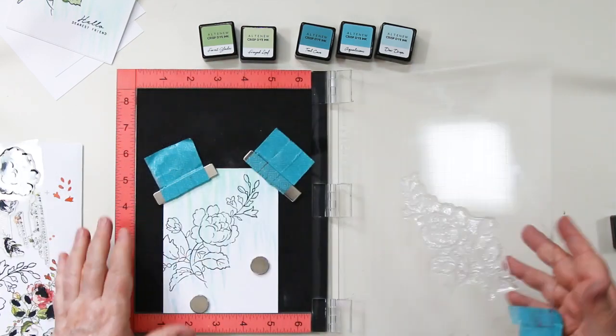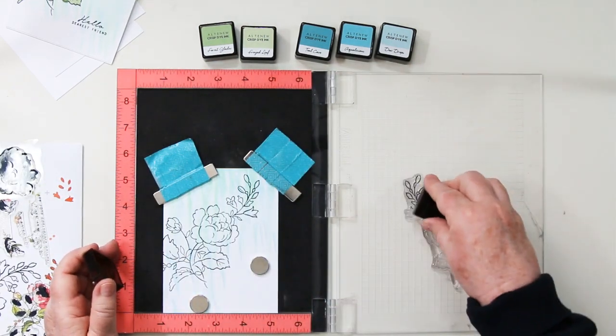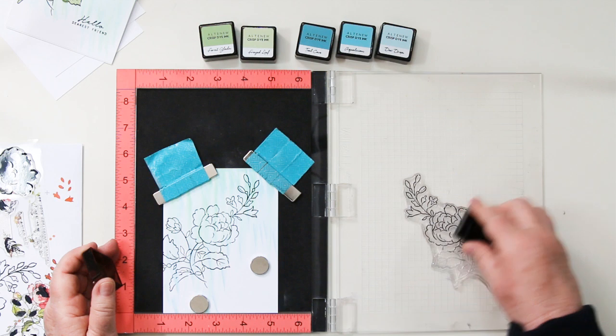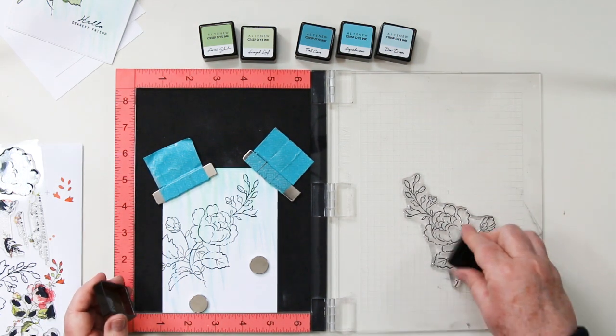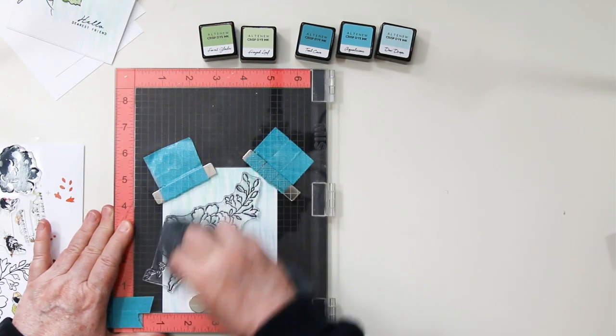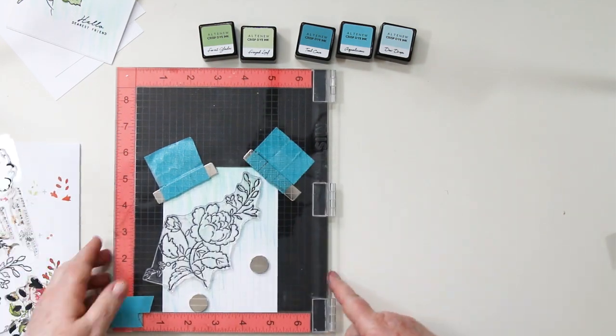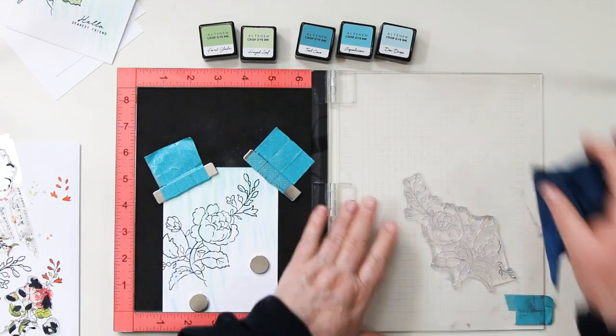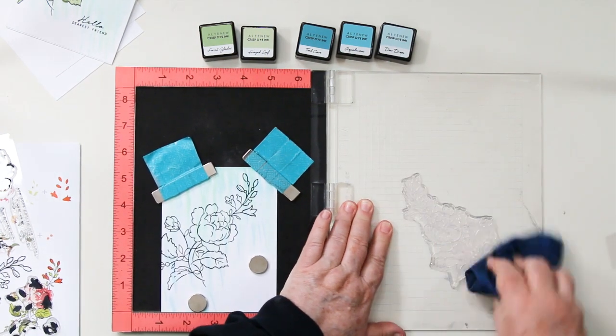The jet black ink is awesome, but I am going to stamp it twice just to make sure I have got a really good dark background for my layered stamping. I'm just using my cloth to help rub on the Misti and I'm going to clean all of this off with my chamois before I switch over.